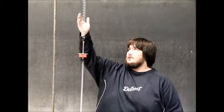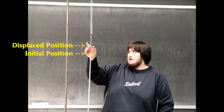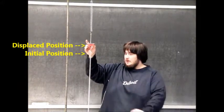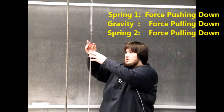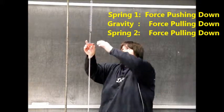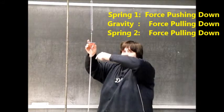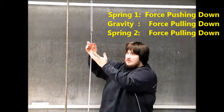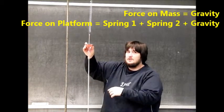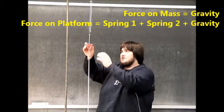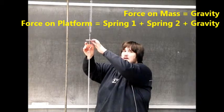The way we get the platform accelerating faster than gravity is with these springs. So if we give it an upward displacement, now this spring is pulling down on our platform, this spring is pushing down on our platform, and gravity is pulling down on our platform. So this will be a much greater acceleration than just our little mass experiences.